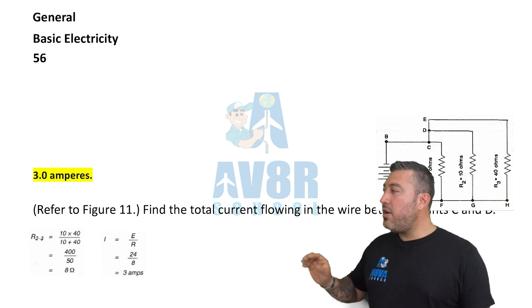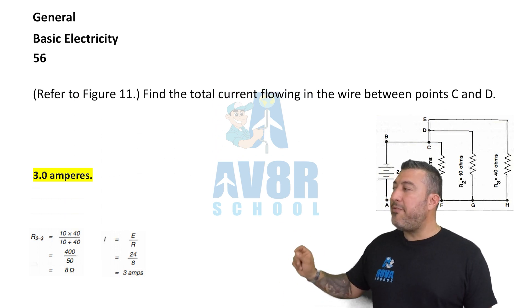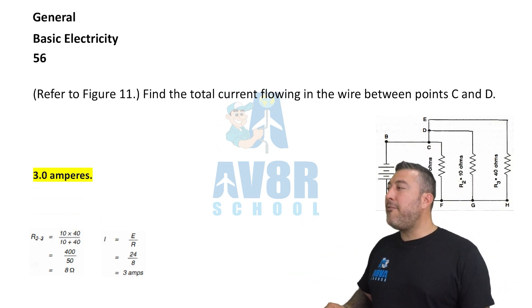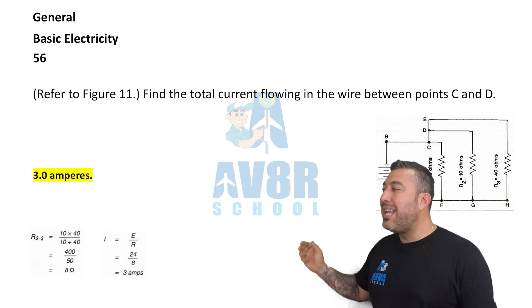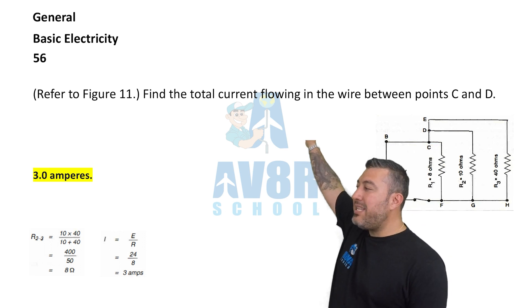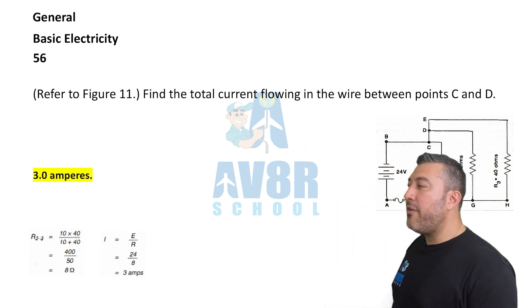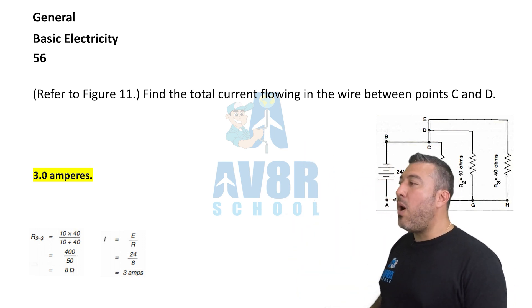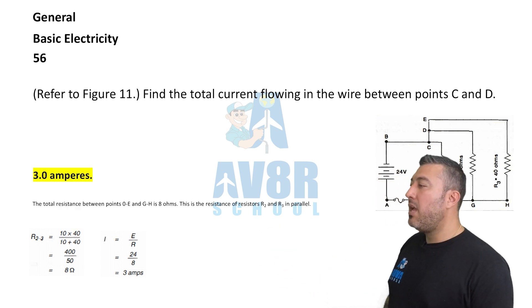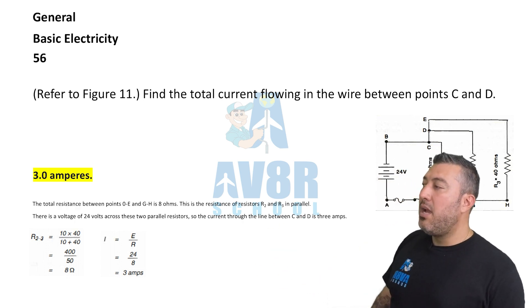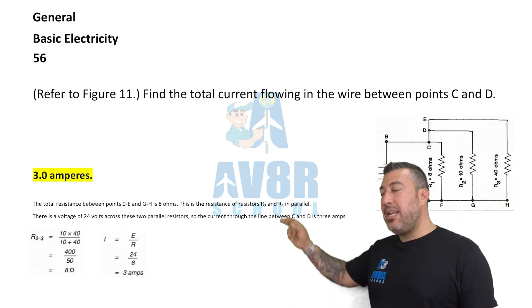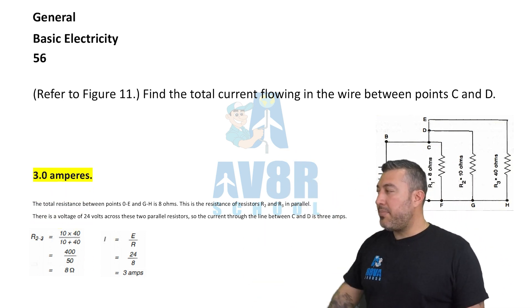Question 56. Figure 11 — find the total current flowing in the wire between points C and D. You're going to get 3 amps.